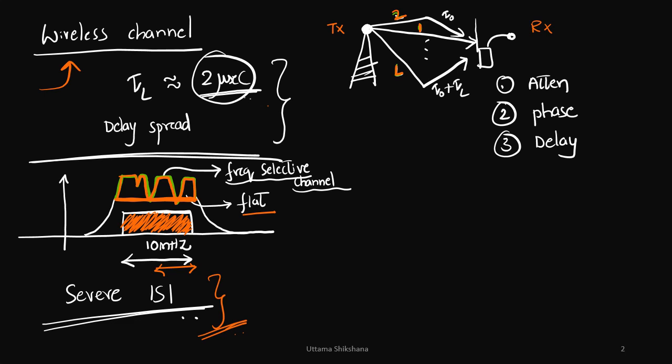Let us see how the severe inter symbol interference is happening. For that, consider the transmitter and receiver in the wireless channel. We will have multipath. Whenever we have multipath, each path will undergo a different attenuation, different phase, and there will be different delay. The main point to be considered is the delay.